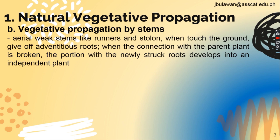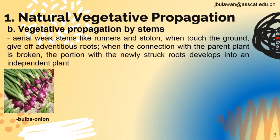Letter B: vegetative propagation by stems. Aerial weak stems like runners and stolons, when they touch the ground, give off adventitious roots. When the connection with the parent plant is broken, the portion with the newly struck roots develops into an independent plant. This creates bulbs; an example is onions.